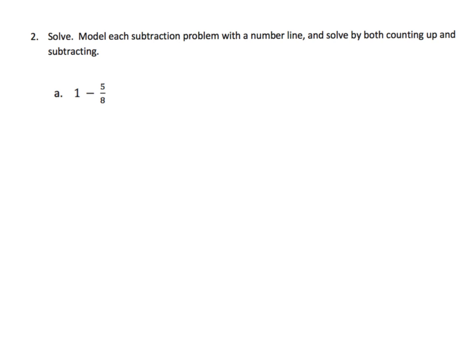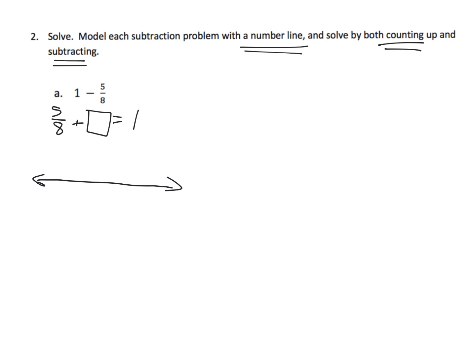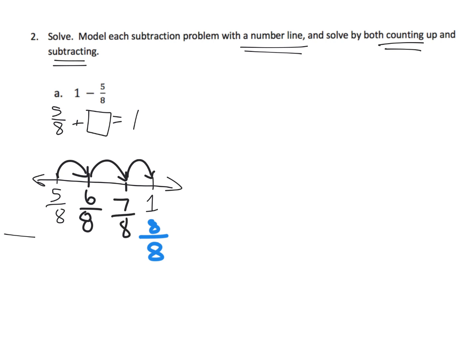We're going to model this problem using a number line, both by counting up and by subtracting. Starting by counting up — my personal favorite — we can think of this as: 5 eighths plus what equals one whole? We put 5 eighths here and one whole, which is also 8 eighths, here. How many steps to go from 5 eighths to 8 eighths? It's 3 steps: 6 eighths, 7 eighths, 8 eighths. So the answer is 3 eighths.